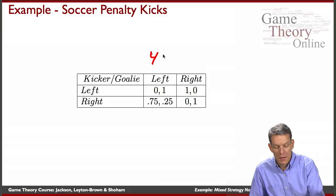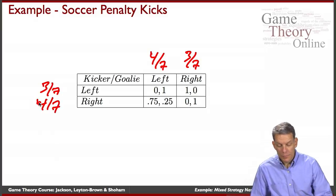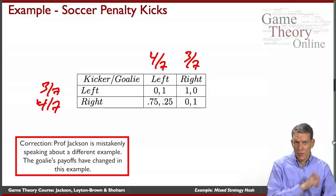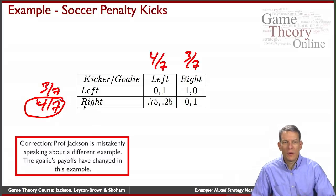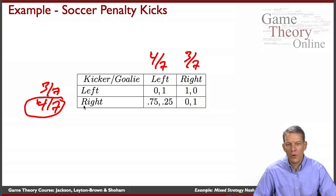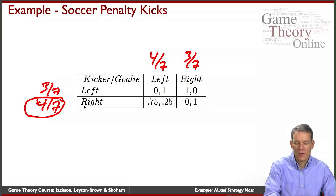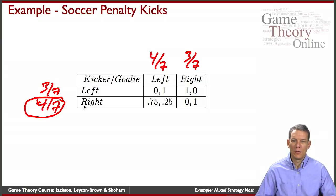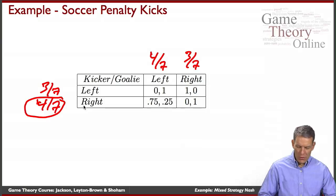So overall, the kicker goes left with probability 3/7 and right with probability 4/7. Two interesting things stand out: first, the goalie's payoffs didn't change but they still had to adjust their strategies. Second, the kicker is actually kicking more often to the weaker side — their right kick got worse, yet they go that direction more often. This is because the goalie has also made an adjustment, and the comparative statics in mixed strategy Nash equilibria are quite subtle and counterintuitive.